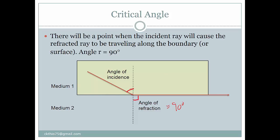This is known as the critical angle. The angle of incidence is now known as the critical angle C, labeled as a small c.